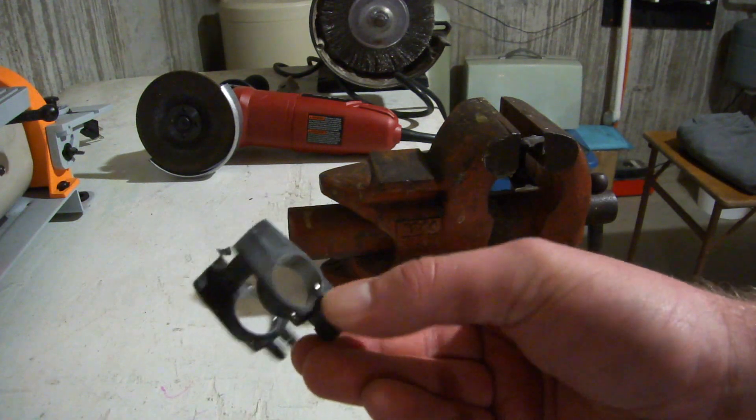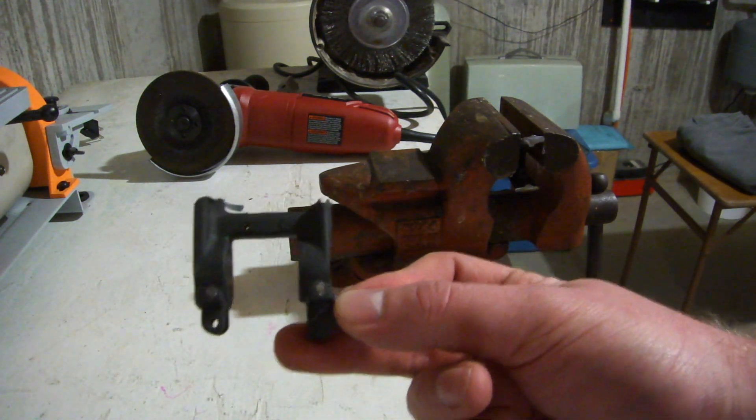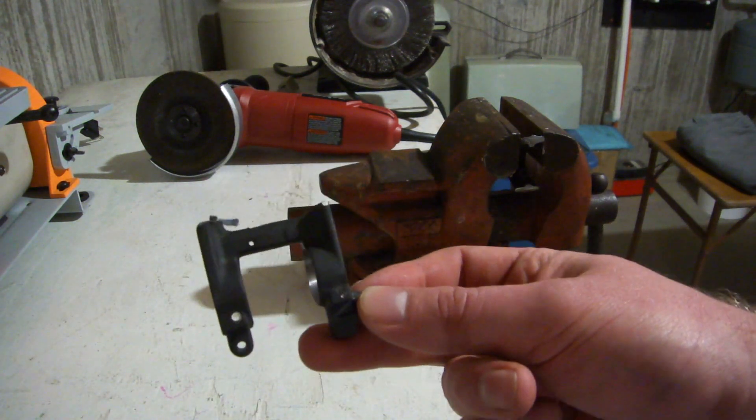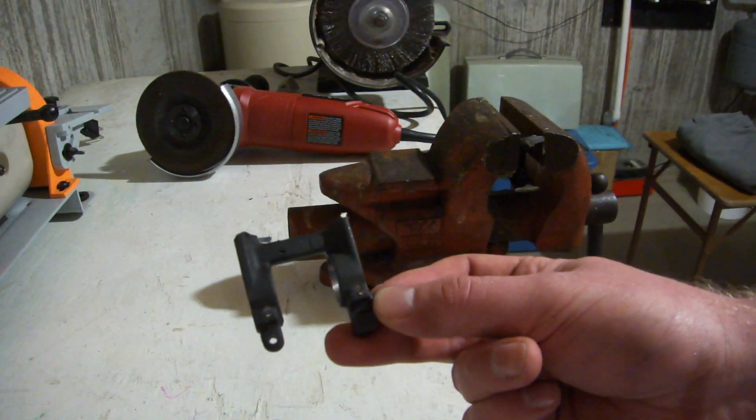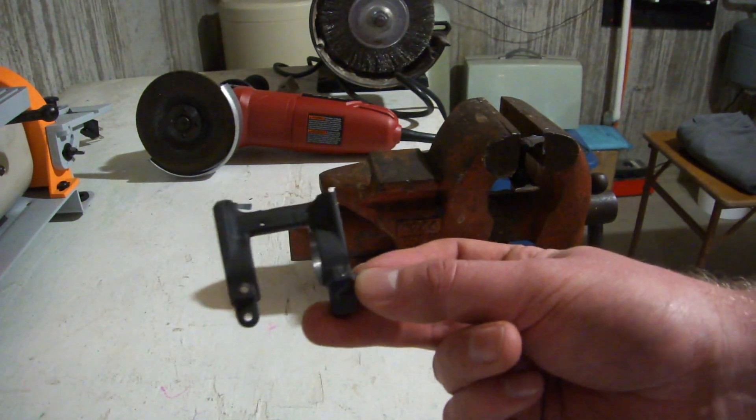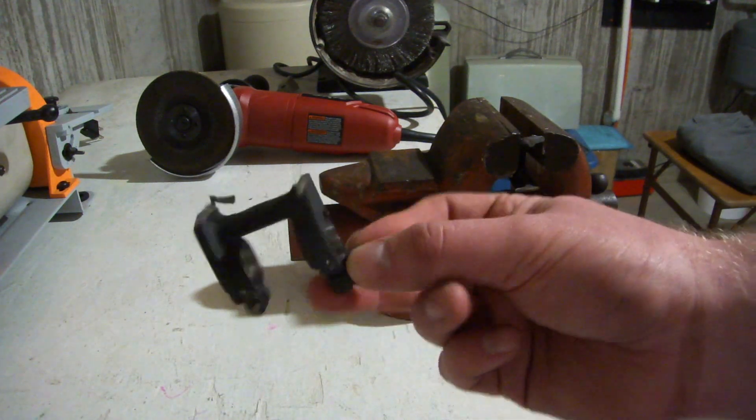That's the main thing about doing this whole operation, is getting that sight tower off of there. If you wanted to do just an optics ready carbine and you didn't want that in your sight picture, this is kind of all you would need to do. It's ugly, but that's that. But if we want to fit it under a rail, we're going to have to do a little bit more.